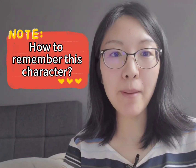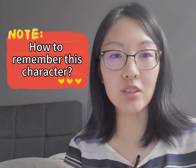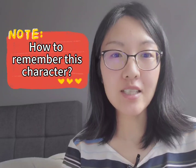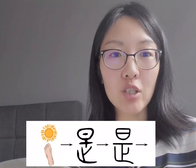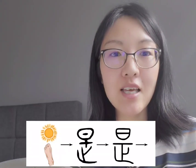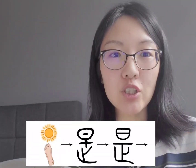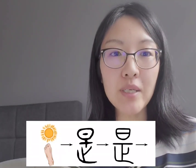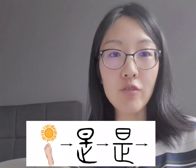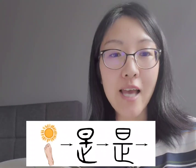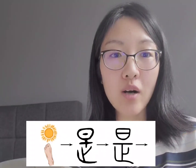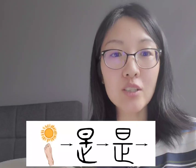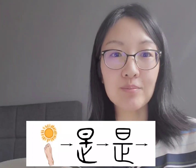How to remember this character? The sun is seen as a symbol for correctness. This character is based on a picture of a foot under the sun. They symbolize walking towards truth.